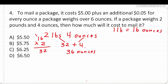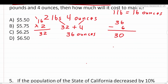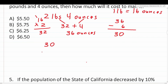It costs an additional five cents for every ounce the package weighs over six ounces. Our package weighs 36 ounces, and 36 minus six is 30. So our package is 30 ounces over the six-ounce limit. According to the problem, we get charged an additional five cents for every ounce over that limit. Our package is 30 ounces over, so we're going to take 30 and multiply that by $0.05.